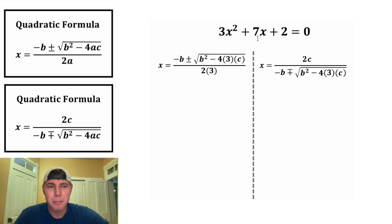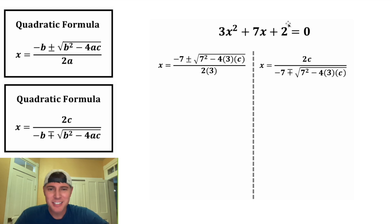The 7x means that b is equal to 7, so we'll change each b to 7. And last, the constant is equal to 2, so we can make each c equal to 2.